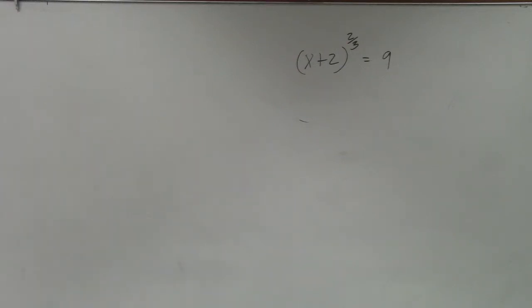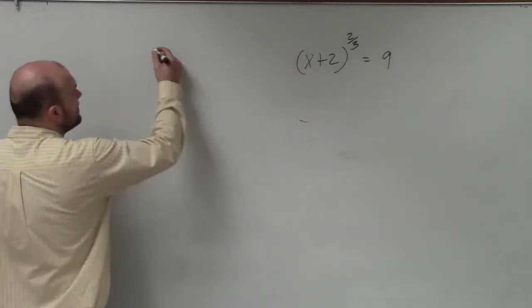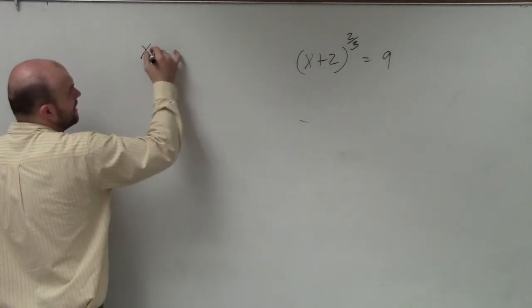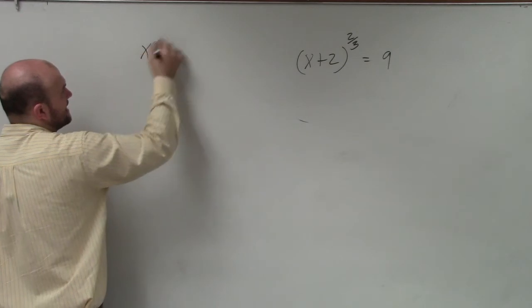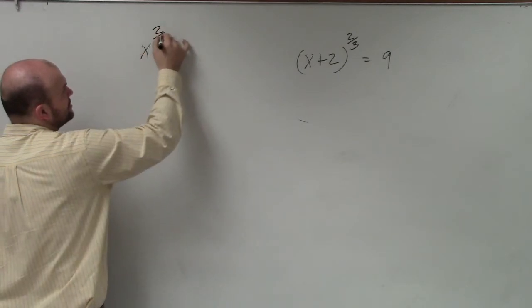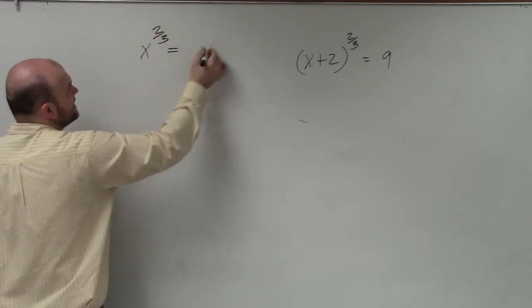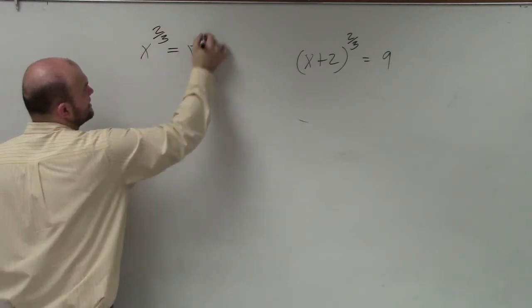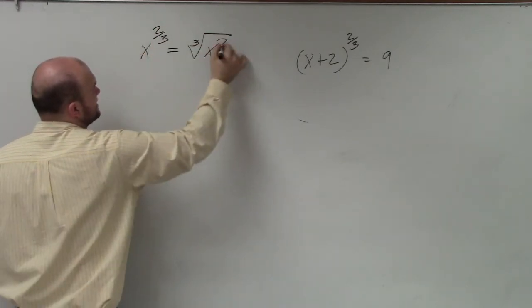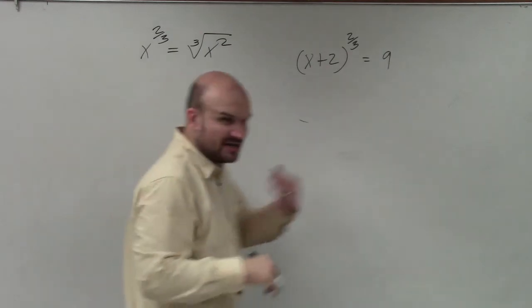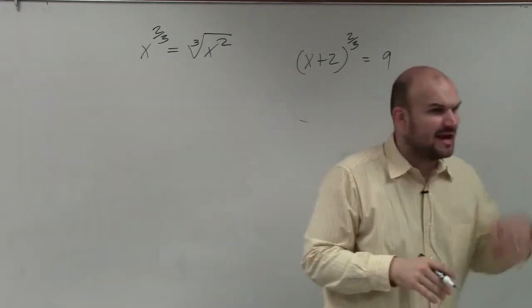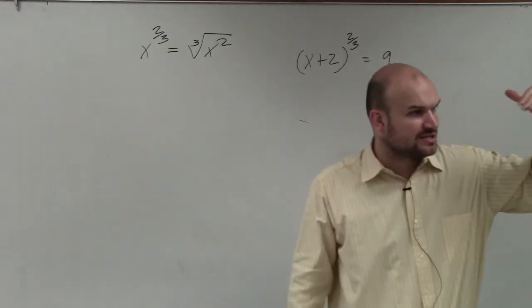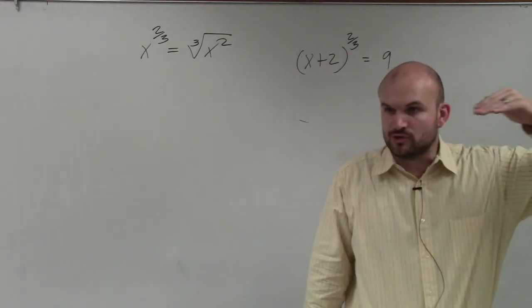If we have x plus 2 raised to the 2/3 power equals 9, the main important thing I want you guys to understand is x to the 2/3 is the same thing as the cube root of x squared. Rational powers are the same thing as roots.